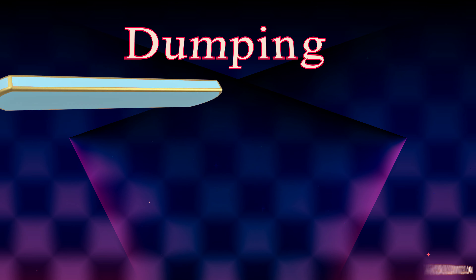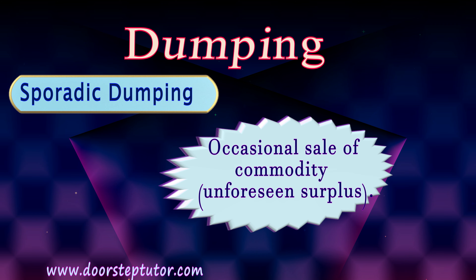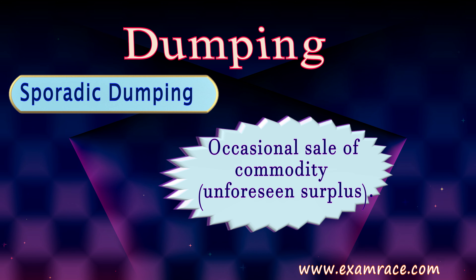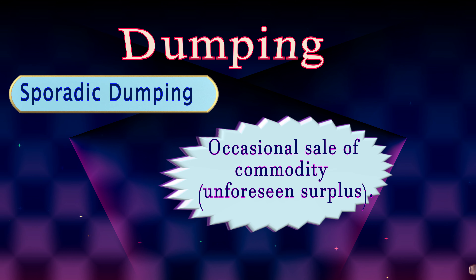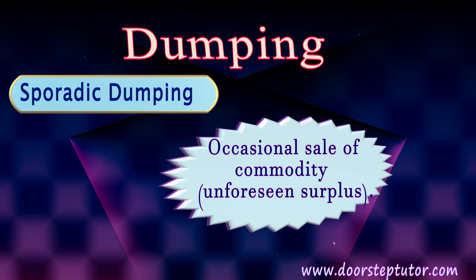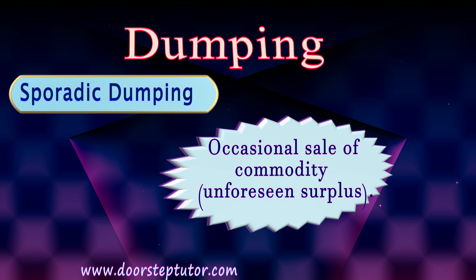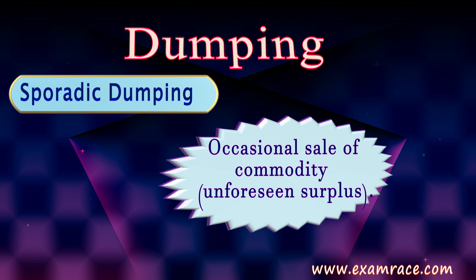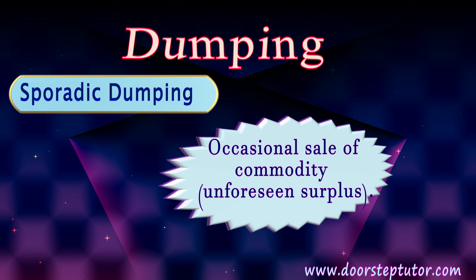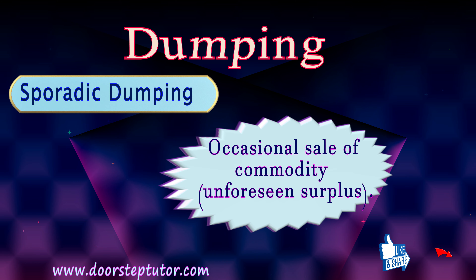Sporadic dumping aims to protect the domestic economy and happens when there is an unforeseen surplus. For instance, if the government registers a bumper harvest of wheat or corn, that surplus is offloaded in the international market. If it were offloaded domestically, supply would exceed demand, prices would fall, and farmers, traders, and industry would all lose. So the excess surplus is sold internationally to protect the domestic market.